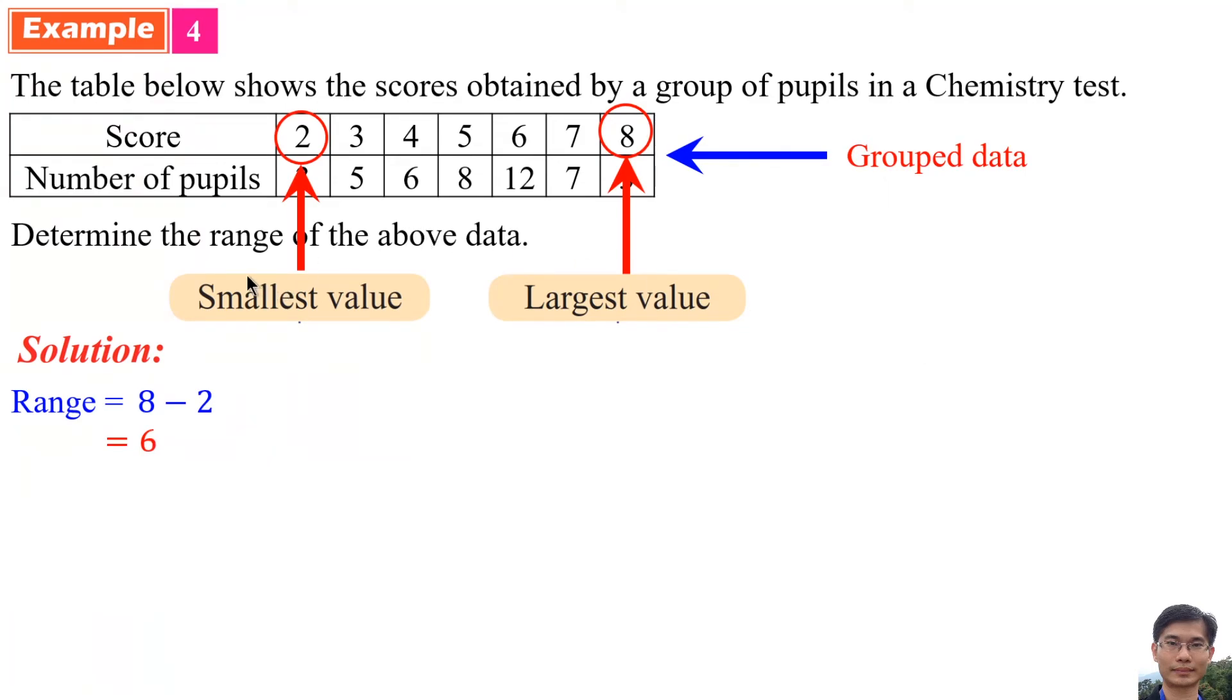We need to know that the range means the range of scores, not the range of pupils. The range of scores is the largest score minus the smallest score.